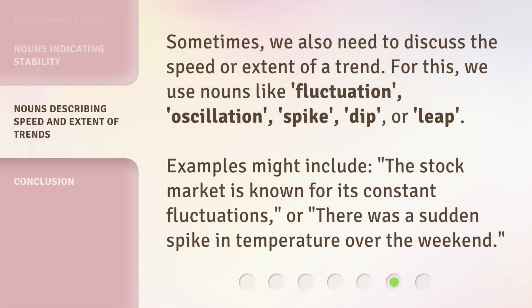Sometimes, we also need to discuss the speed or extent of a trend. For this, we use nouns like fluctuation, oscillation, spike, dip, or leap. Examples might include: 'The stock market is known for its constant fluctuations,' or 'There was a sudden spike in temperature over the weekend.'